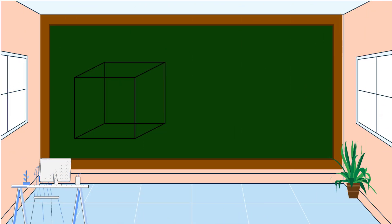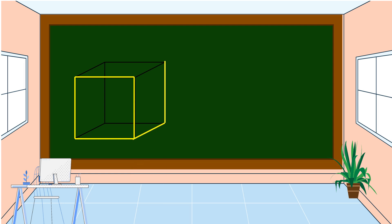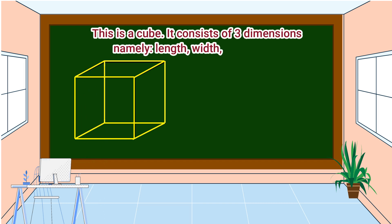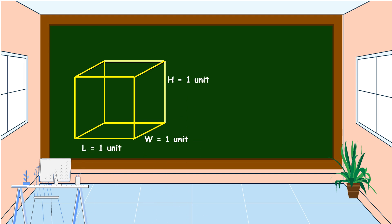If we add another dimension to a square — which is the height — it becomes a solid figure. This is a cube. It consists of three dimensions: the length, the width, and the height. The measurements of the length, width, and height are all equal, because this is a cube.